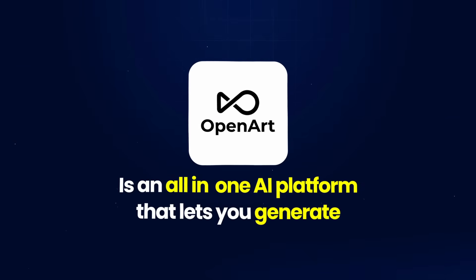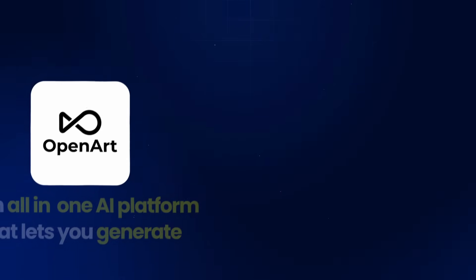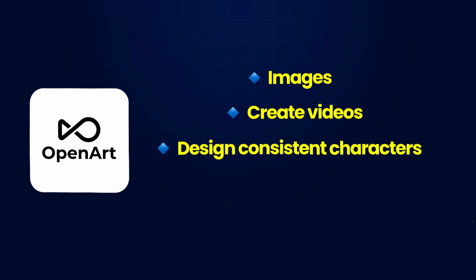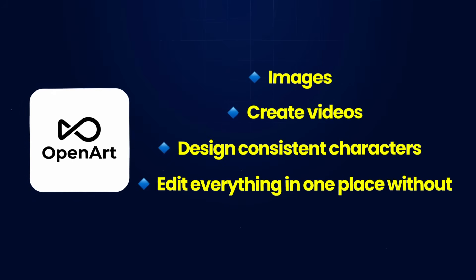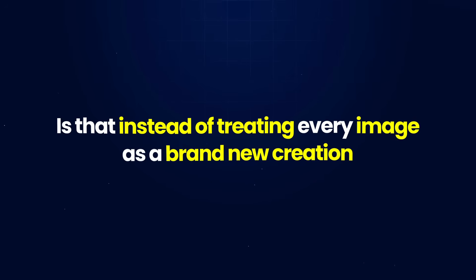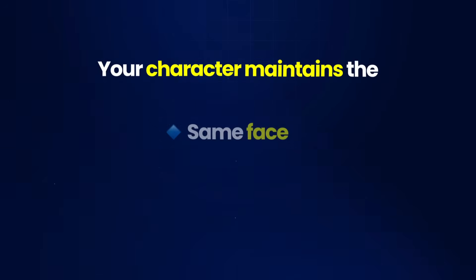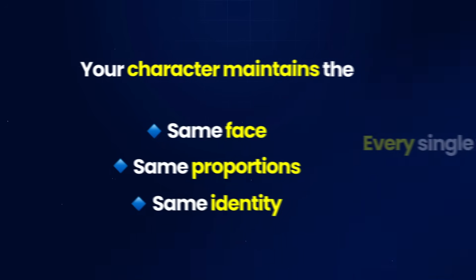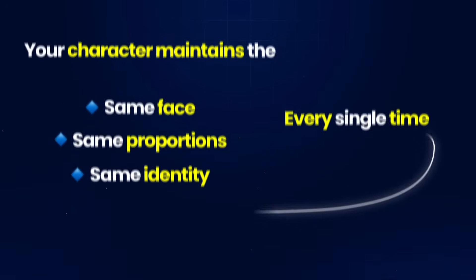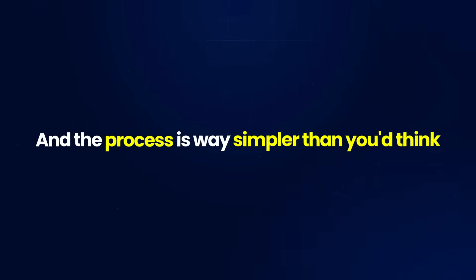OpenArt is an all-in-one AI platform that lets you generate images, create videos, design consistent characters, and edit everything in one place without needing multiple subscriptions. What makes it different is that instead of treating every image as a brand new creation, OpenArt actually trains a dedicated model that remembers your character's features. Once you set it up, your character maintains the same face, same proportions, same identity every single time. And the process is way simpler than you'd think.